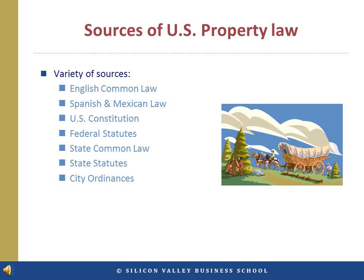Some of the current rules and doctrines date back to English common law, decided by judges in England and subsequently followed in the United States. Many of the southern states derive some property law from their Spanish and Mexican civil law ancestry.